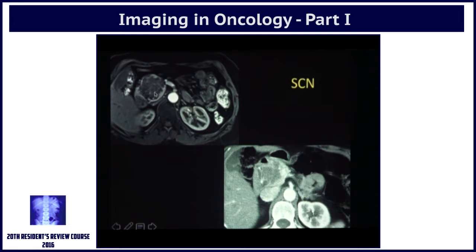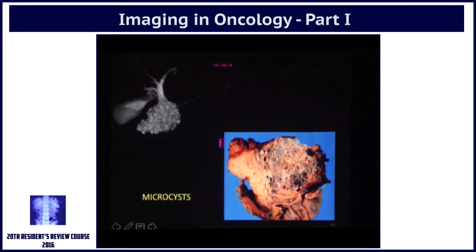Another case showing microcysts at the head of the pancreas — this is the MR image and this is the CT. There are thin septae which enhance. If you see this image, I don't think you'll ever miss it. These are the microcysts at the head of the pancreas, and this is the pathological specimen — a classic case of serocystic adenoma.